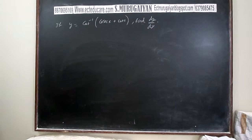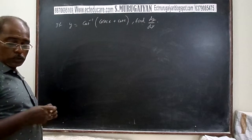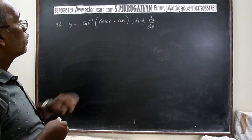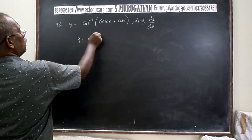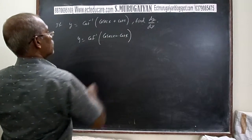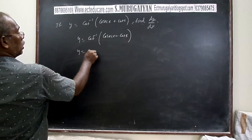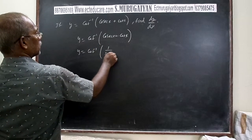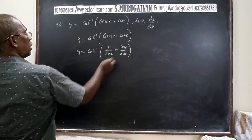The next question is: y = cot⁻¹(cosec x + cot x). We need to find dy/dx. First simplify: cosec x = 1/sin x and cot x = cos x/sin x. So y = cot⁻¹((1 + cos x)/sin x).